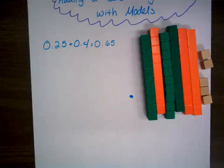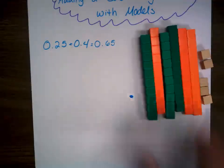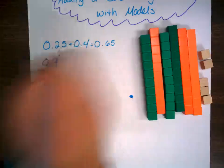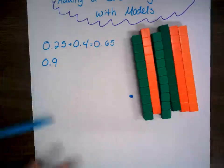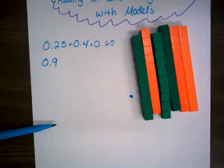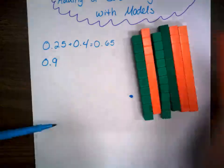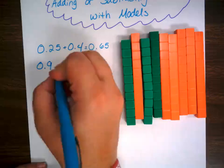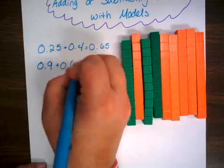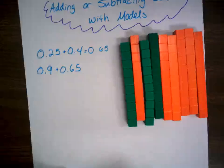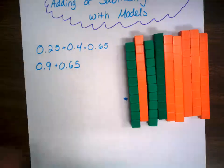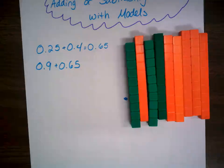Let's take another one. Let's go with 0.9 — nine tenths. So I'm going to have nine tenths. And let's go ahead and add to that 0.65 — the same number from before. So I have nine tenths and I'm going to add 65 hundredths to that.